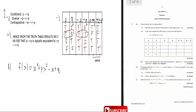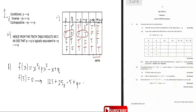It has a factor of x - 5 and a remainder of 24 when divided by x - 1. Since x - 5 is a factor, f(5) = 0. Plugging in 5: 5³ = 125, so we get 125 + 25p - 5 + q = 0, which gives us 25p + q = -120.